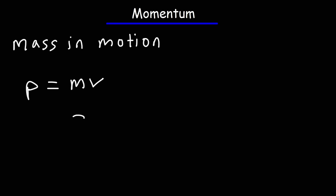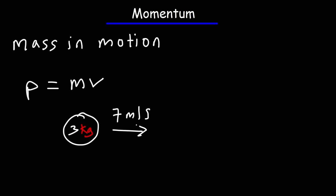For instance, let's say we have a three kilogram ball with a velocity of seven meters per second due east. What's the momentum of this object? The momentum is going to be three times seven — it's going to be positive 21 kilograms times meters per second.